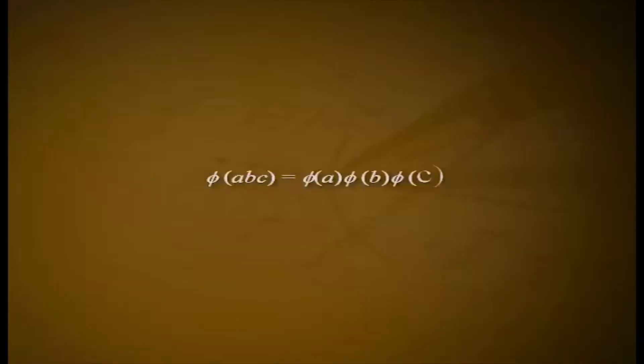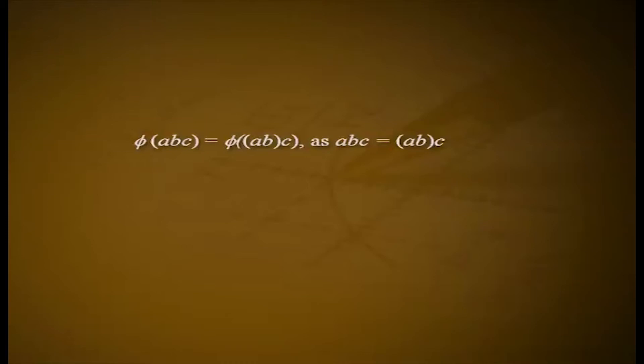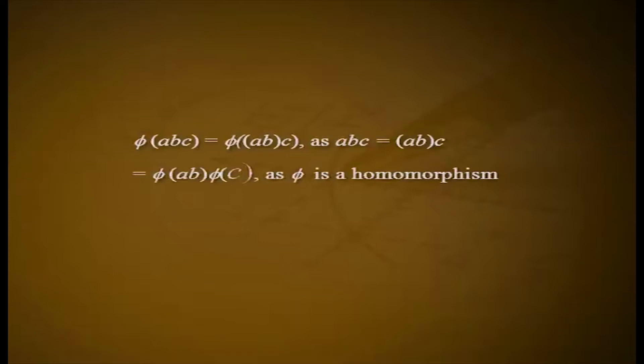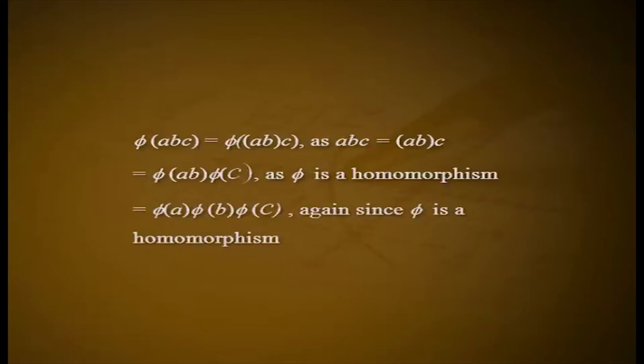Remark 2. If phi from G to G dash is a homomorphism and a, b, c belong to G, then phi of abc is equal to phi of a into phi of b into phi of c. This can be seen as follows: phi of abc equals phi of (ab)c, which equals phi of ab into phi of c since phi is a homomorphism, which equals phi of a into phi of b into phi of c, again since phi is a homomorphism.